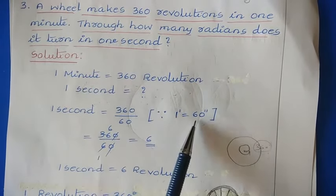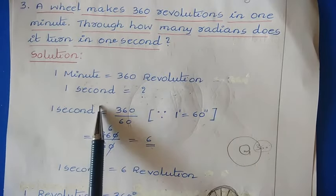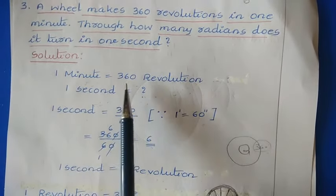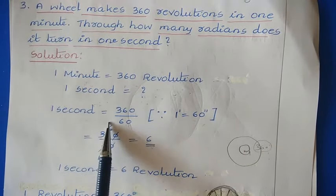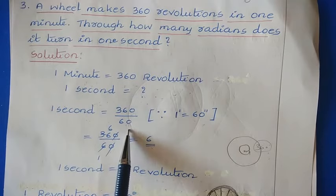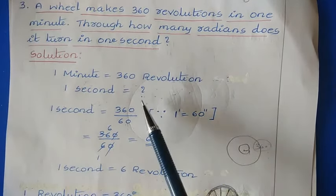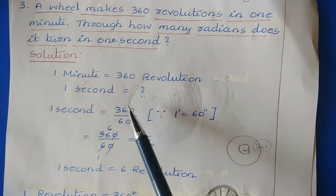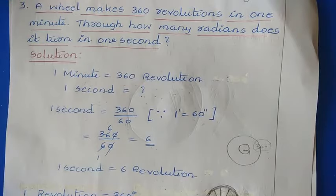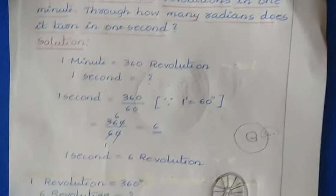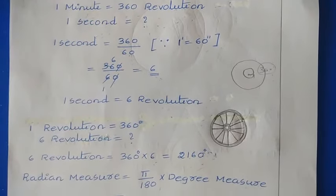1 minute is equal to 60 seconds. So to find the number of revolutions in 1 second, divide 360 by 60. So in 1 second, that equals 360 divided by 60. The zeros cancel, giving us 6. So in 1 second, the wheel makes 6 revolutions.